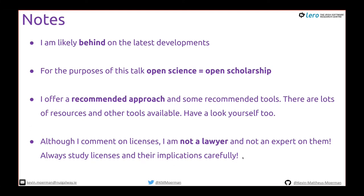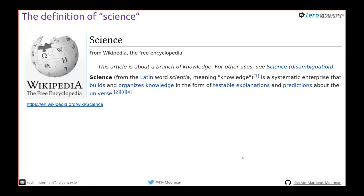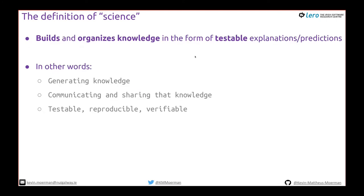I do comment on licenses for open access and open source, but I'm not a lawyer, so always study licenses carefully. Let's look at the definition of science — from Wikipedia: science comes from the Latin 'scientia' meaning knowledge. It's a systematic enterprise that builds and organizes knowledge in the form of testable explanations. We generate knowledge, put it somewhere, communicate and share it so people have access to it and can test, reproduce, and verify it. That should just be science.